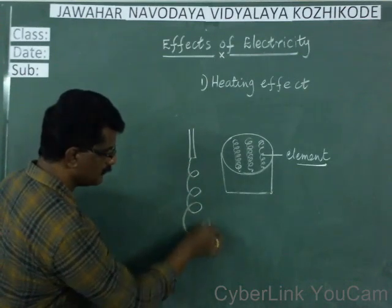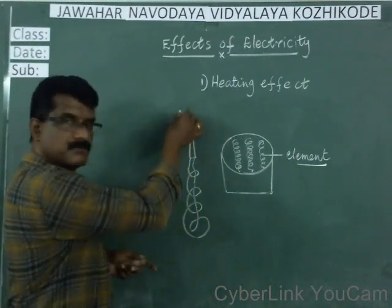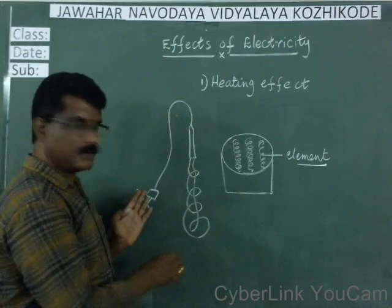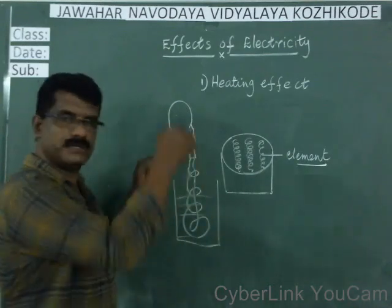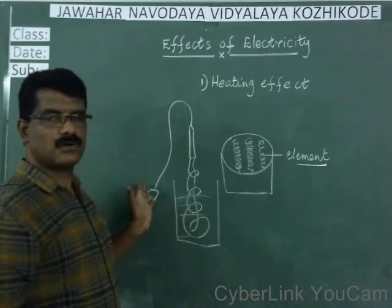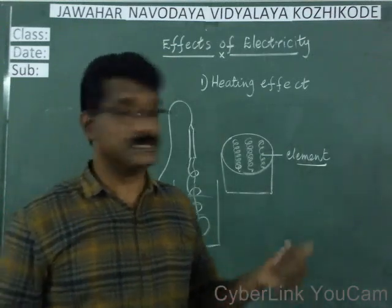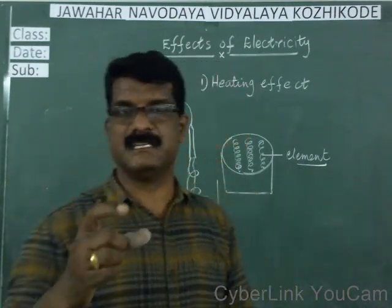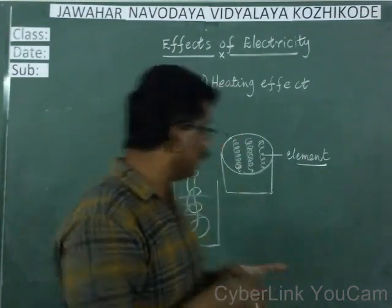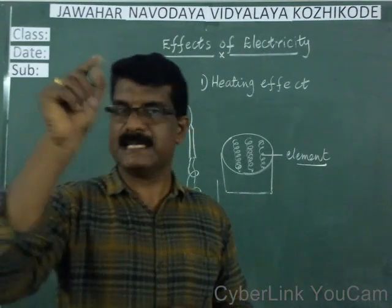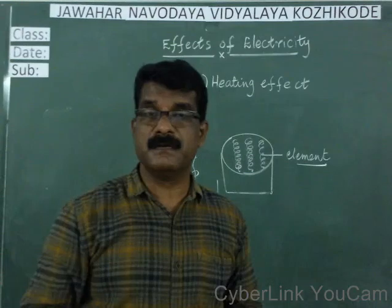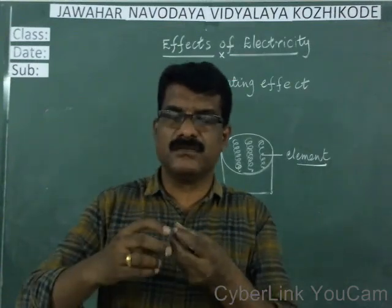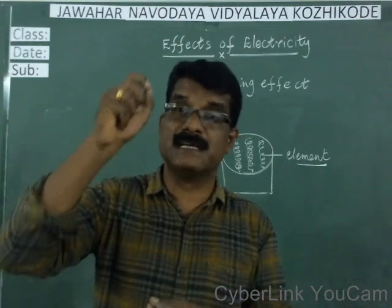The immersion rod, which you might have seen, is used for heating water. You can plug it on, put it in a bucket containing water, switch it on, and the water will be boiled. The metallic part which becomes hot after passing electricity is known as the element. In a bulb, we call it the filament - that is the heating element. The metal used in a bulb for making the filament is tungsten. The material which becomes hot when electricity is passed is known as the heating element.